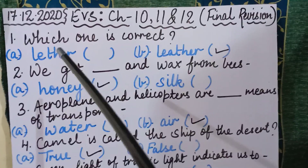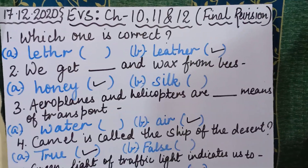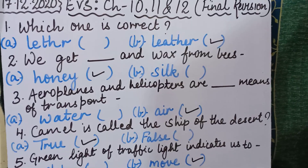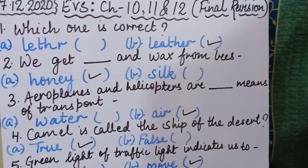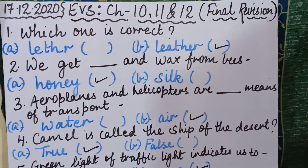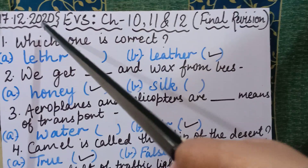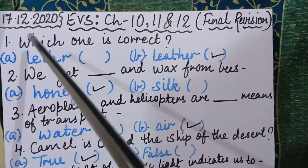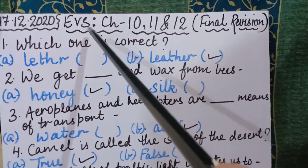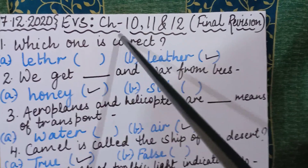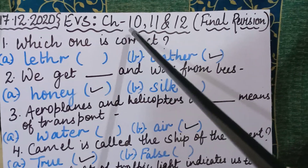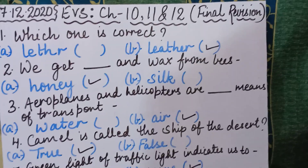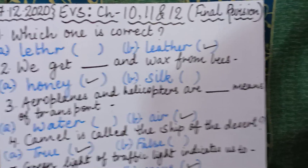Before starting with the questions, you all know that when we start a new revision or new topic, we start from a new page. Write down today's date: 17-12-2020, and the heading: EVS Chapters 10, 11, and 12 Final Revision, or Revision Number 10.